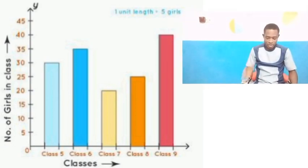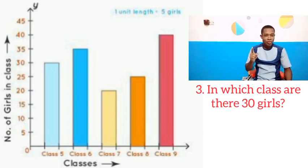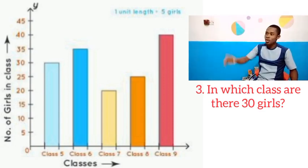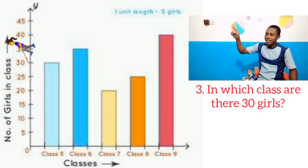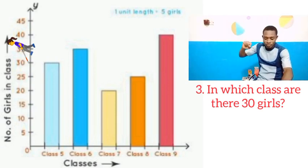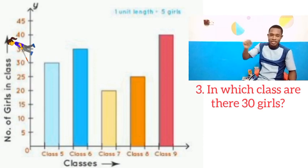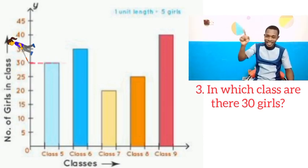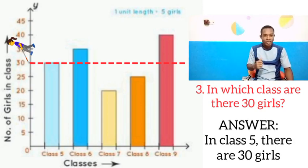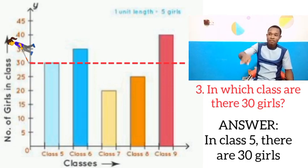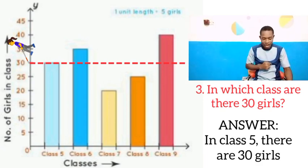We will move on to question number 3: In which class are there 30 girls? Go to the Y axis — the vertical line — and check where you have 30. From that 30, trace the horizontal line and see the top of the rectangular bar it touches. The dotted red line is checking it for us, and the tracing shows that in class 5 there are 30 girls. Because when you drew that dotted line, it came to the top of the rectangular bar of class 5, so there are 30 girls in class 5.